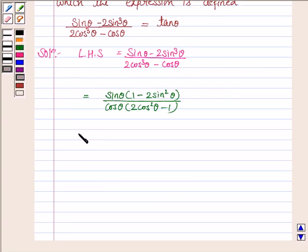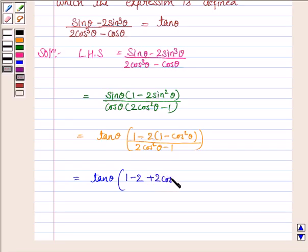Now sin θ upon cos θ is tan θ into 1 minus 2 sin square θ. Sin square θ can be written as 1 minus cos square θ, as we know that sin square θ plus cos square θ is 1. So we get 1 minus 2 times (1 minus cos square θ) upon 2 cos square θ minus 1.